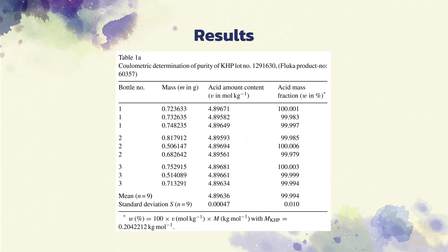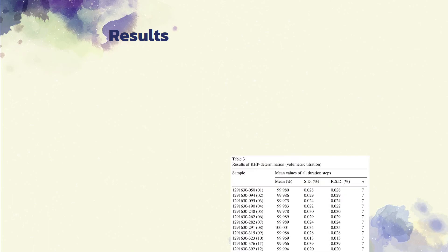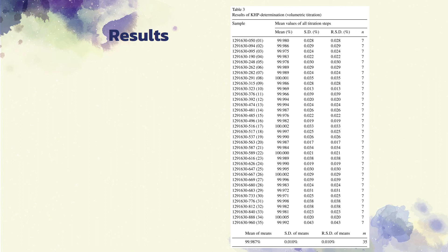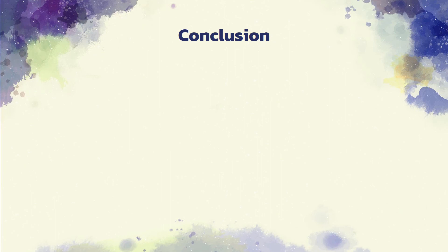Now we go to the results. Table 1A shows the results of the nine coulometric determinations of three different bottles of the investigated KHP batch, and the mean as well as the standard deviation of the mean. Calculation of the uncertainty for the coulometric determination is shown in table 2. The results of the volumetric determination are given in table 3. For each of the 35 bottles, the means of seven single determinations are listed together with the corresponding absolute and relative standard deviations. There was no hint for any inhomogeneity of the material. Table 4 shows potential contributions to the combined uncertainty of the results received from volumetric titration. The different results for both methods used for the determination of the mass fraction of KHP are summarized in table 5.